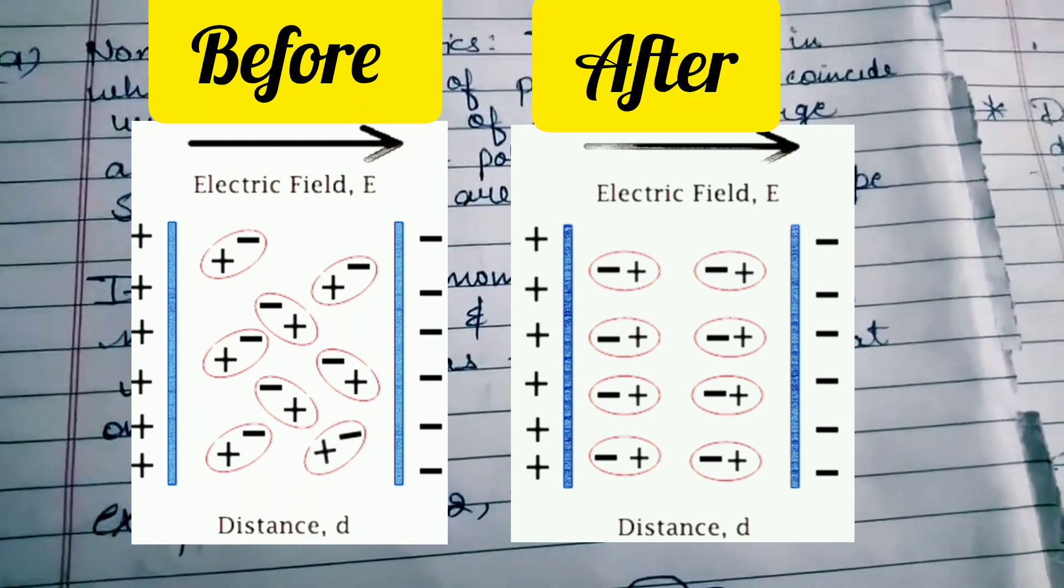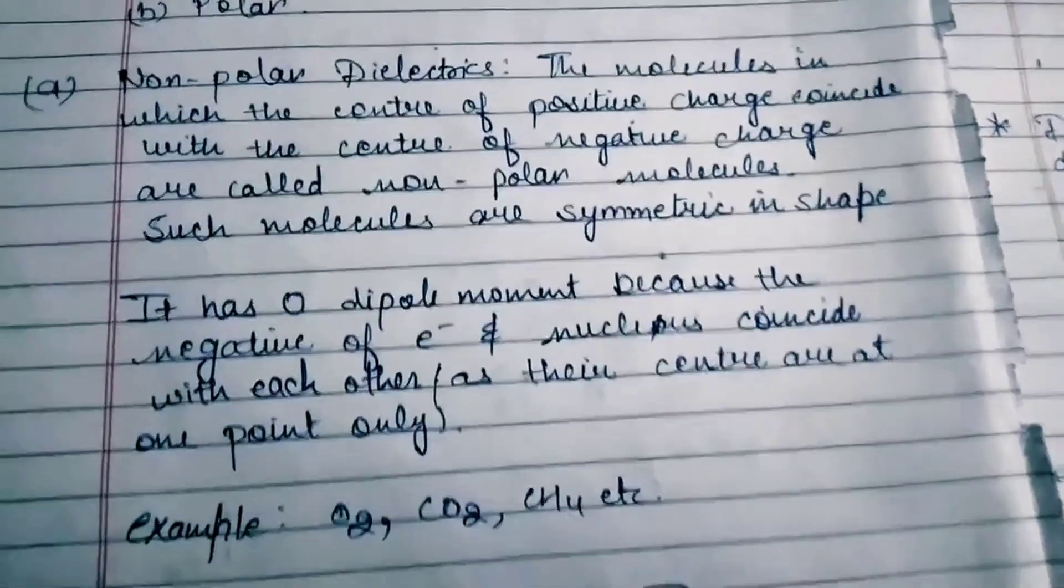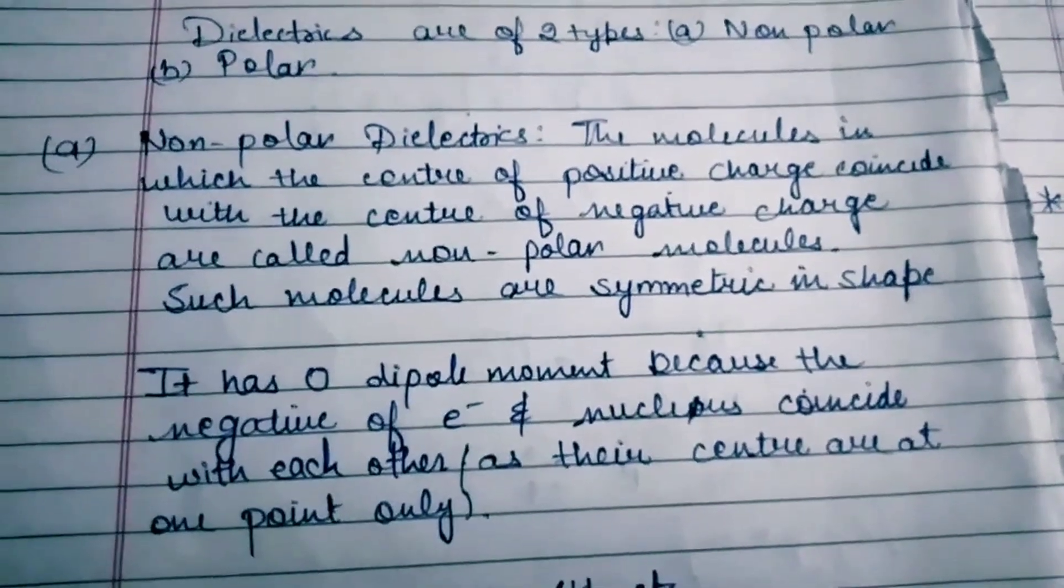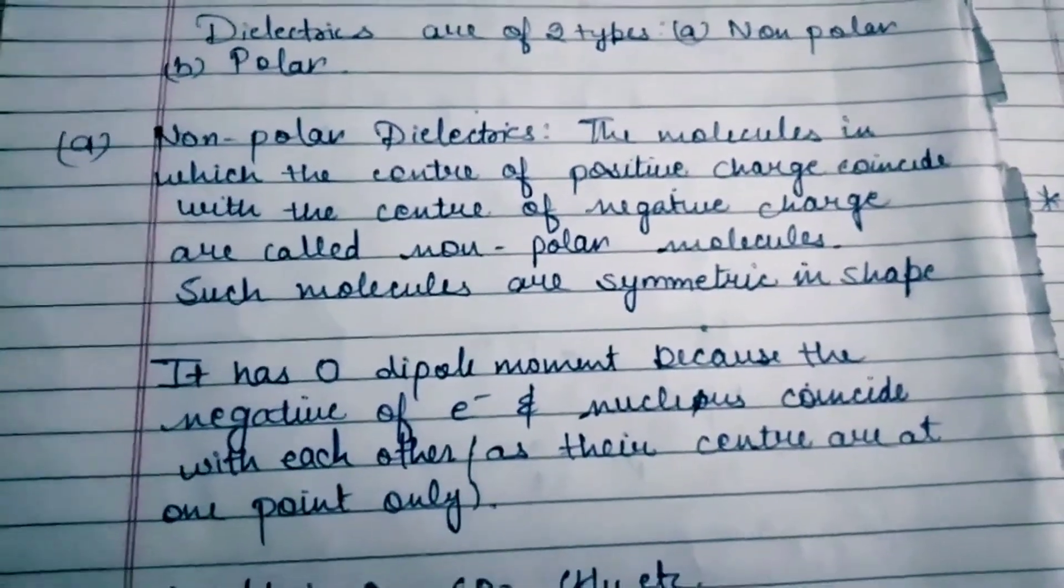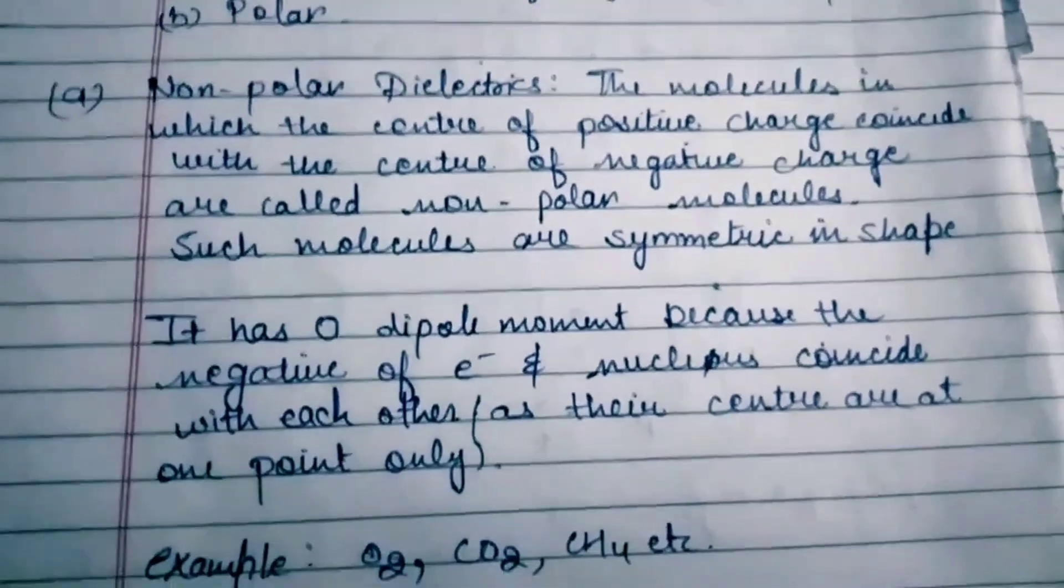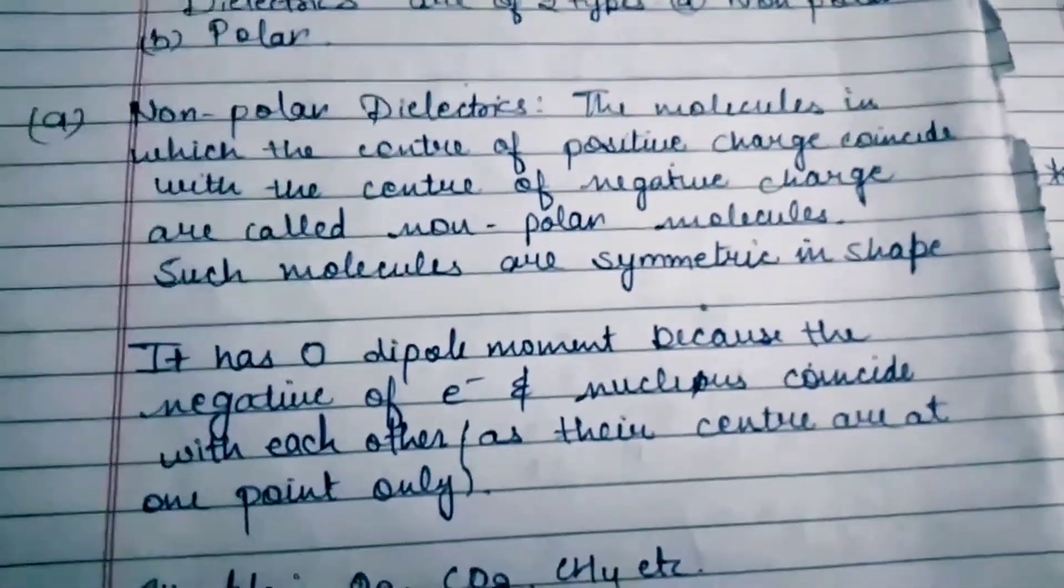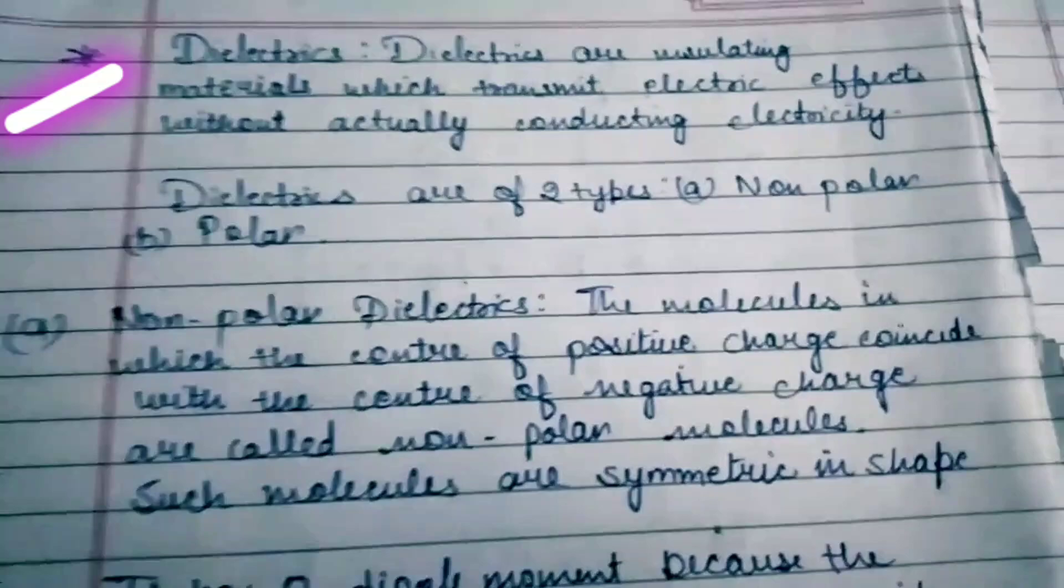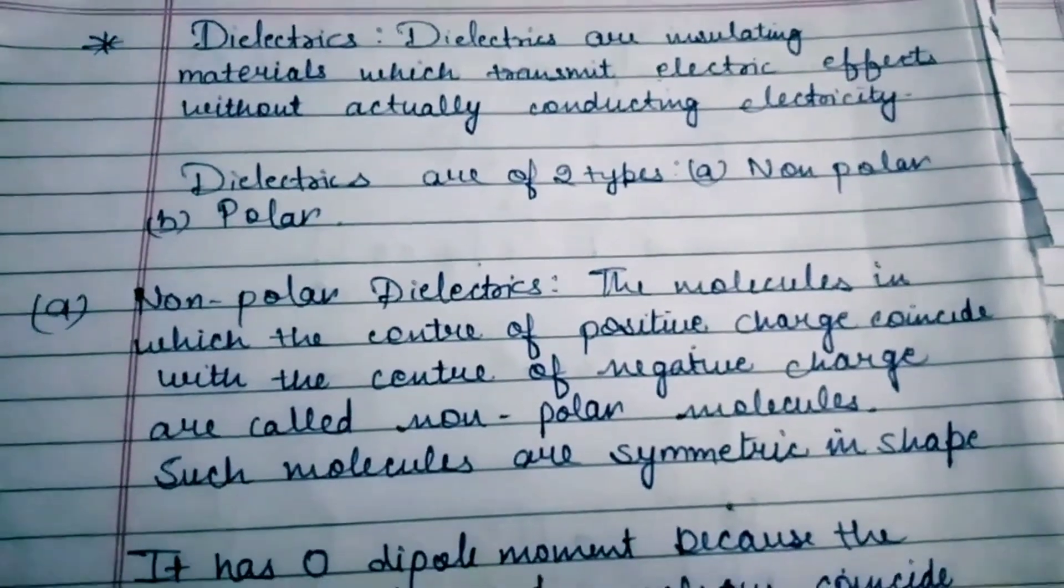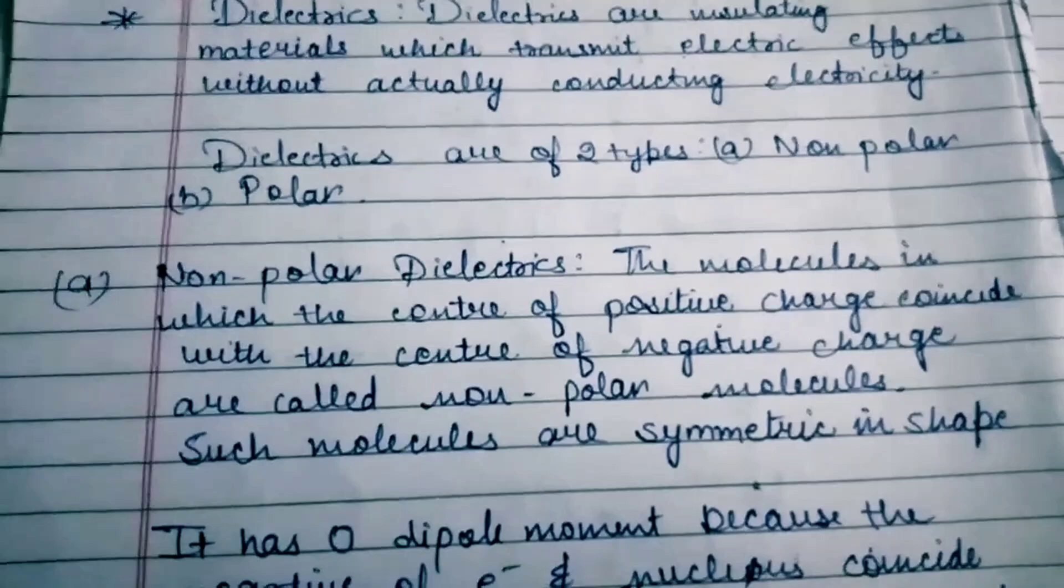There is a difference between an insulator and a dielectric. An insulator opposes the flow of electrons or charges, while a dielectric stores electric charges. Dielectric materials can be polarized while insulators cannot. Dielectrics are insulating materials which transmit electric effects without actually conducting electricity.